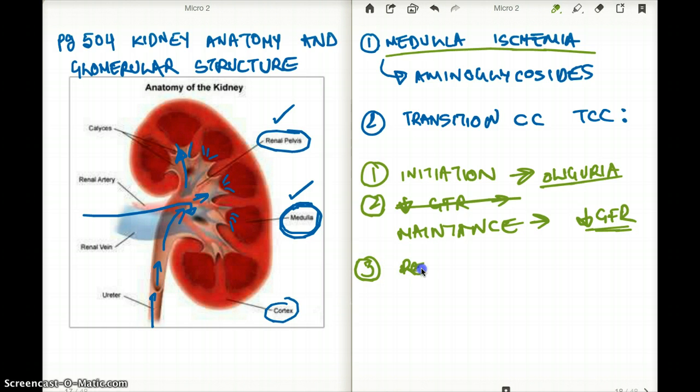And last of all, we have the recovery phase. If the person recovers, then we are going to have re-epithelialization of the kidney, and you might even have polyuria because you had oliguria before.